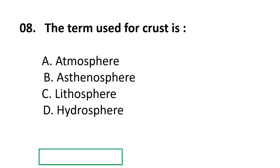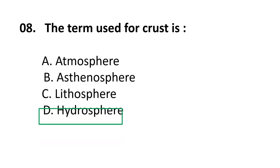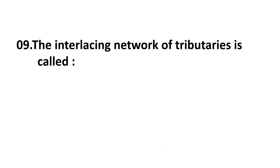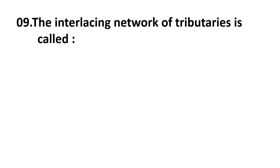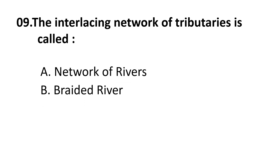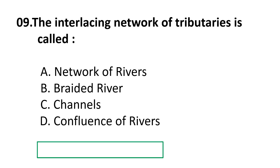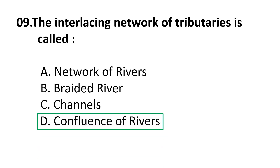The correct answer for Question 8 is C) Lithosphere. Question 9: The interlacing network of tributaries is called — choices are: A) Network of rivers, B) Braided river, C) Channels, D) Confluence of rivers. The correct answer is D) Confluence of rivers.